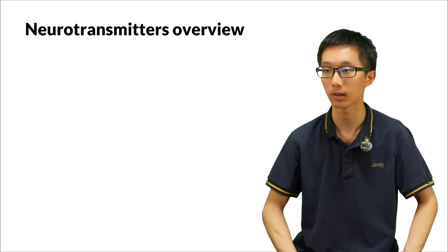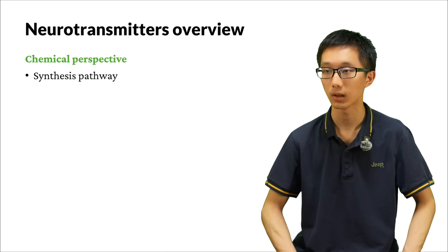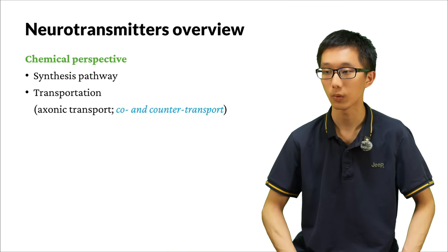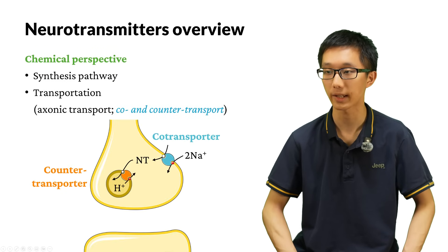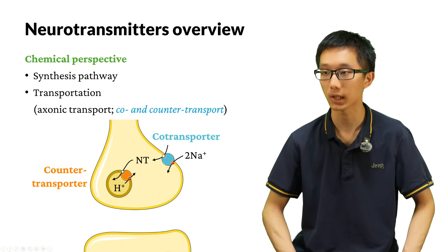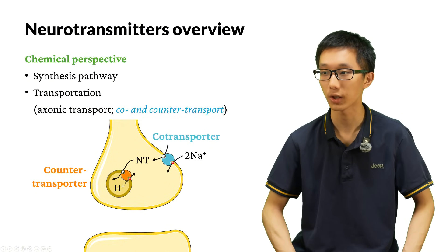Neurotransmitters have many characteristics worth learning about. From the chemical perspective, we can learn about its synthesis pathway and its transportation. Transportation includes axonic transport — the transport of neuropeptides from the soma to the axon terminal — and also co-transport and counter-transport at the axon terminal. For example, glutamate is co-transported with sodium ions when moved from outside to inside the cell. When glutamate is transported into the vesicle, there is counter-transport: glutamate moves in while protons are moved out. This high proton concentration inside the vesicle is created by ATPase proton pumps.